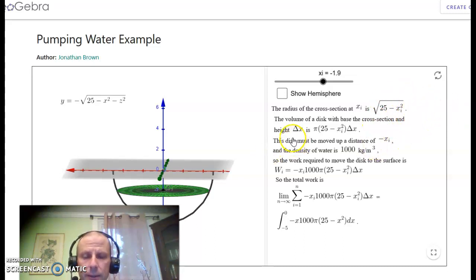As I noted earlier, this now has to be pumped up a distance of minus x_i. The density of the water is 1,000 kilograms per meter cubed, which means that the mass is going to be 1,000 times this volume we calculated earlier. Therefore, the work to pump that little slice out is going to be w_i equals minus x_i times 1,000 pi times the quantity of 25 minus x_i squared times delta x.